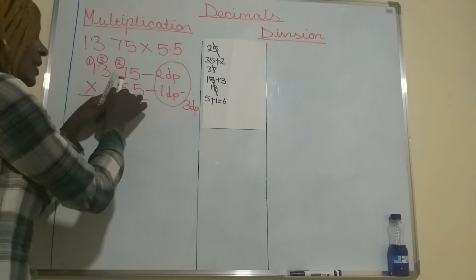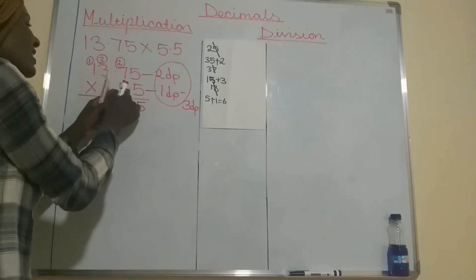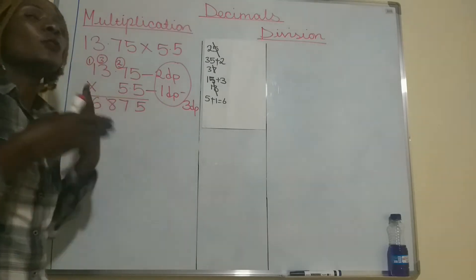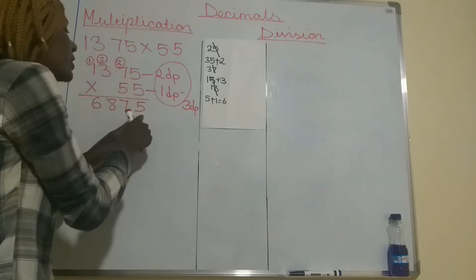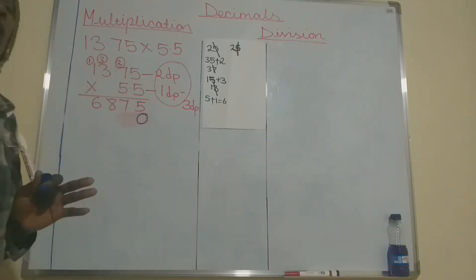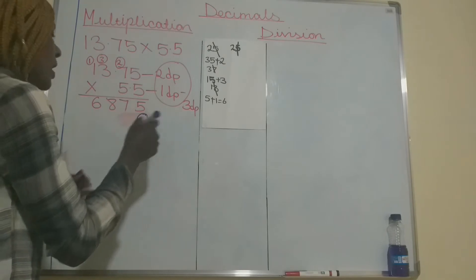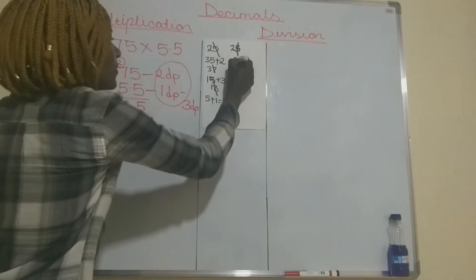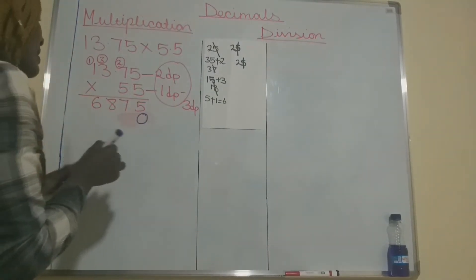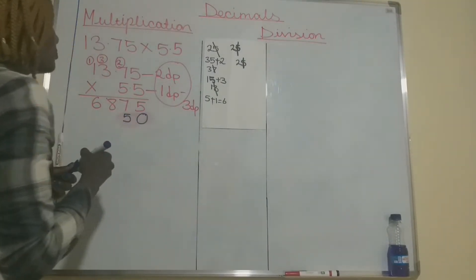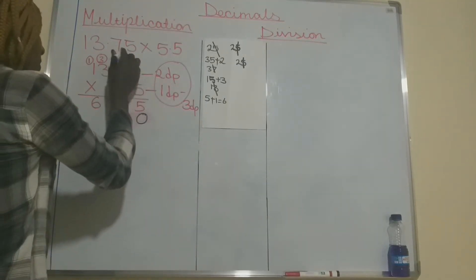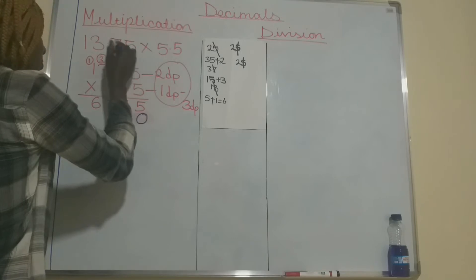Now you start multiplying the second number. You do it the usual way — whenever you're multiplying the tens digit, you always put a zero there first. So start multiplying: 5 multiplied by 5 gives you 25. That 5 is the one you write down here, and that 2 you carry to the next number.